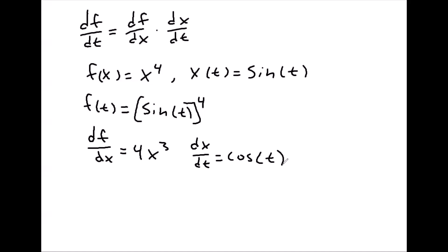And so therefore the derivative of f with respect to t would just be multiplying those two, would be 4x cubed times cosine of t. And since x represents the sine function, that's 4 times sine of t to the third power times cosine of t.